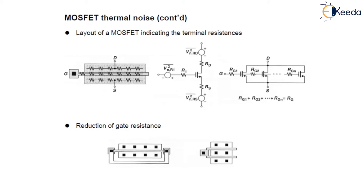This is all about thermal noise in MOSFETs, which is given by 4kTγgm, with γ taken as 2/3 for long channel devices. To reduce the gate resistance, we can metal-cap each end of the gate or fold the device. In the next lecture, we will study about flicker noise. Thank you.